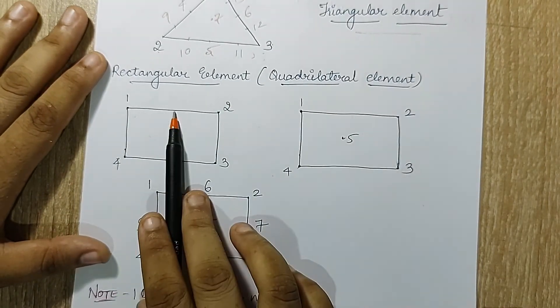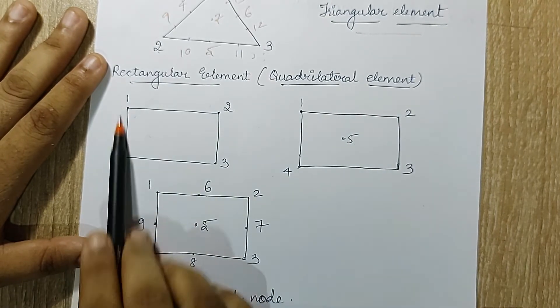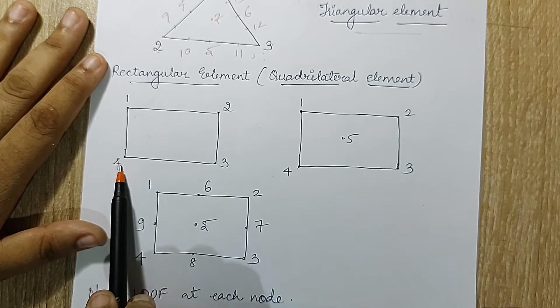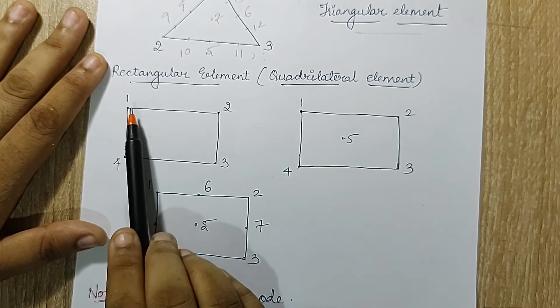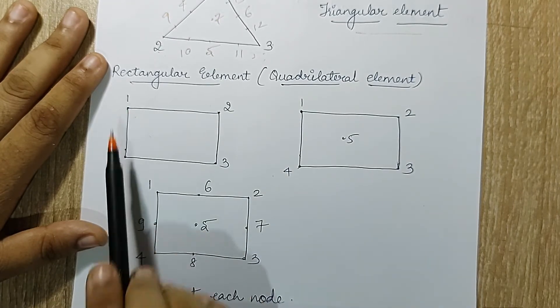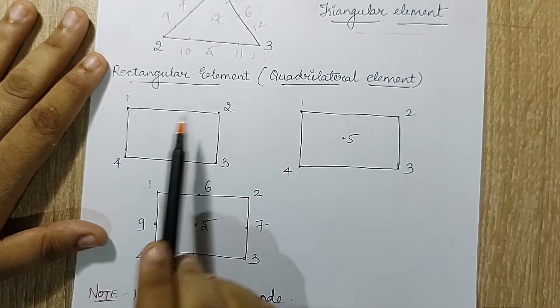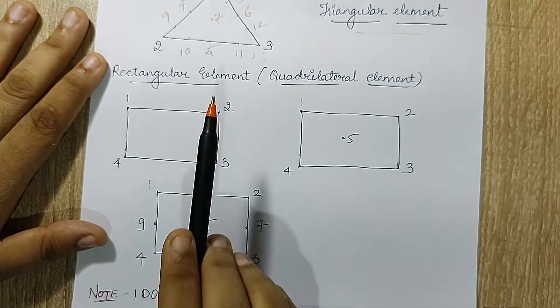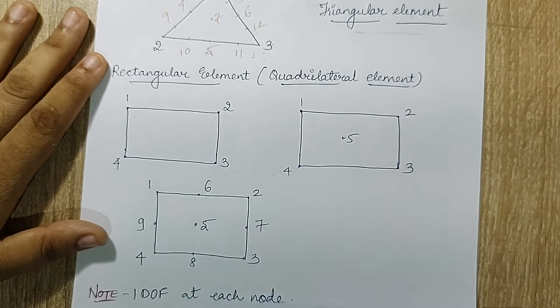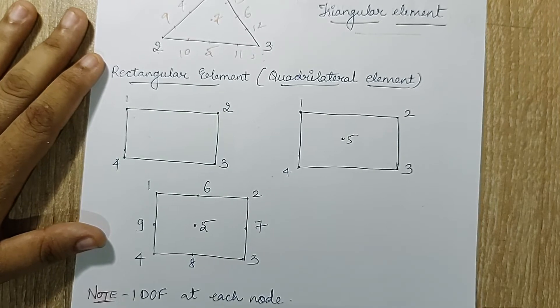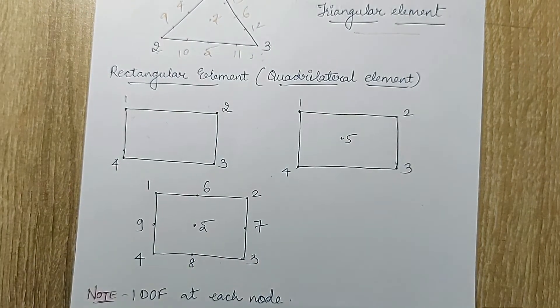This was all about a triangular element. You can also have a rectangular element which is called a quadrilateral element. This is a quadrilateral as you are seeing. I can mark it as one, two, three, four at the four vertices. You can see here a clockwise pattern of marking. If you want, you can mark one, two, three, four in different orders, but random marking of your nodes is something that is not preferred, as I have already told you when you write the KME and GME.